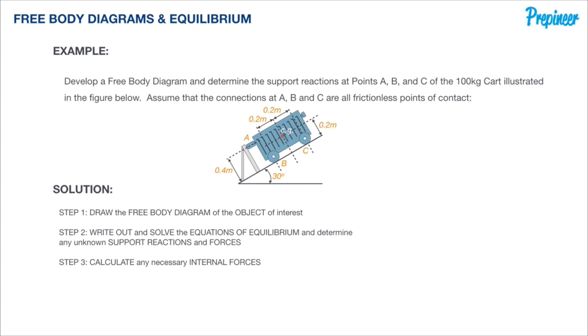This example says develop a free body diagram and determine the support reactions at points A, B, and C of the 100 kilogram cart illustrated in the figure below. Assume that the connections at A, B, and C are all frictionless points of contact.